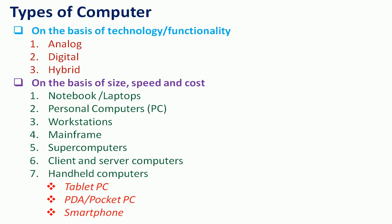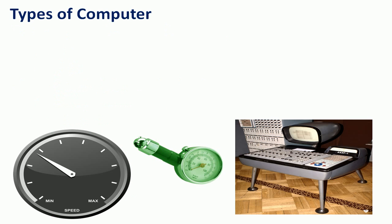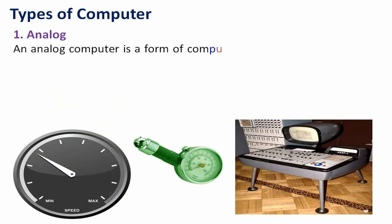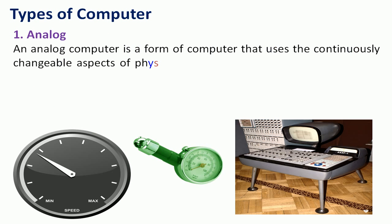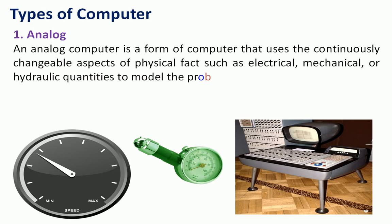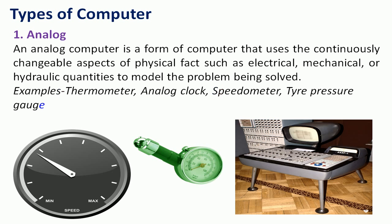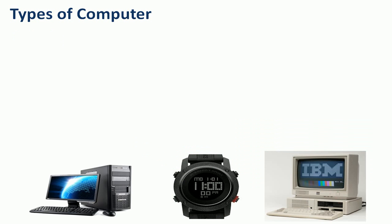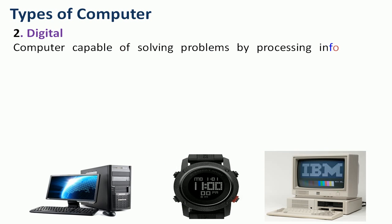In handheld computers we have three types: Tablet PC, PDA, and Pocket PC or smartphones. Let's begin with analog computers. An analog computer is a form of computer that uses the continuously changeable aspect of physical phenomena such as electrical, mechanical, or hydraulic quantities to model the problem being solved. For example: thermometer, analog clock, speedometer, and tire pressure gauge.